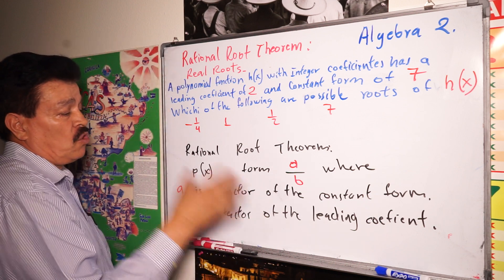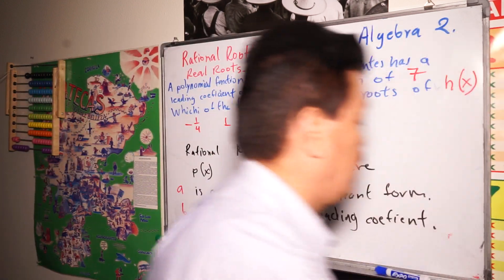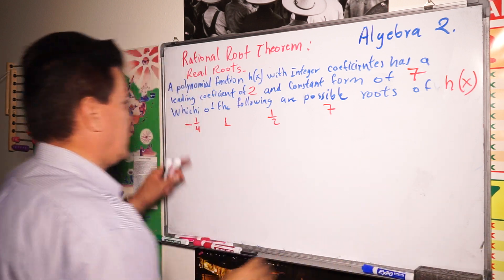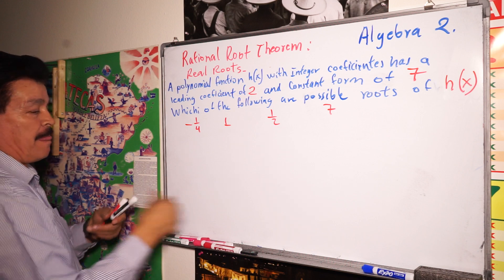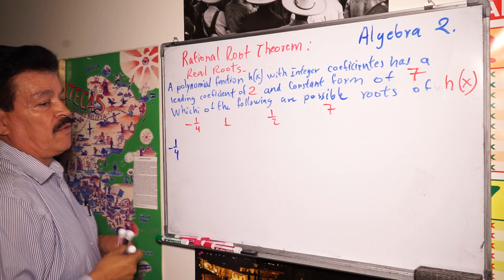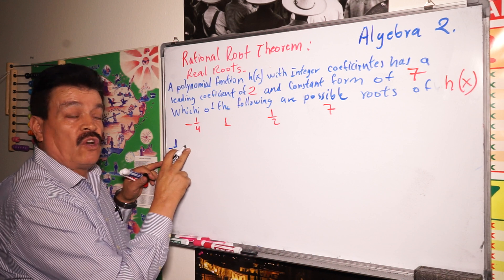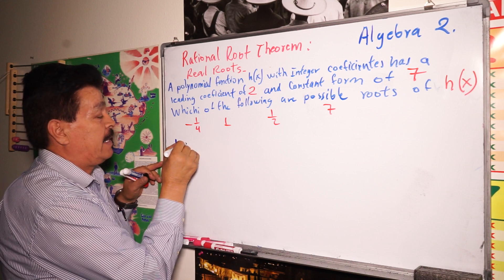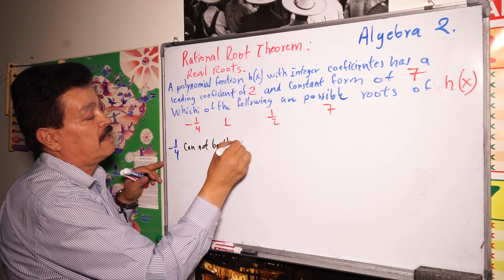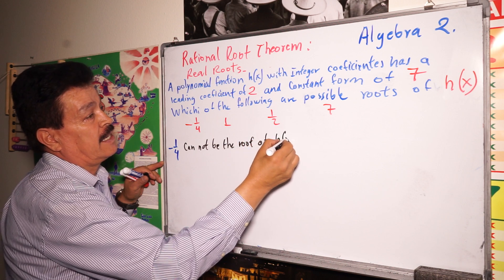Let's apply this theorem to the problem. Let's look at number one: negative 1/4. This number cannot be the root of h(x).